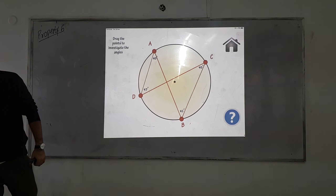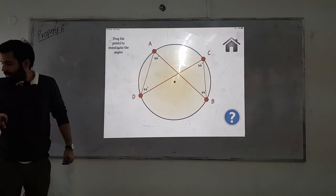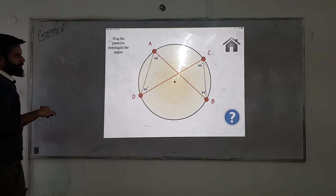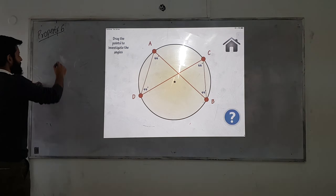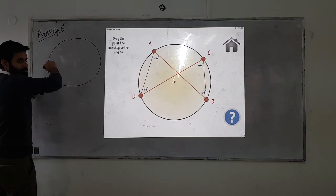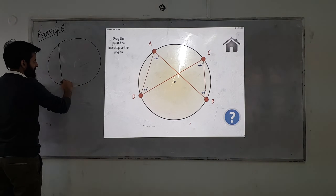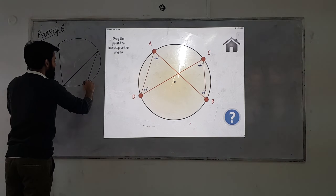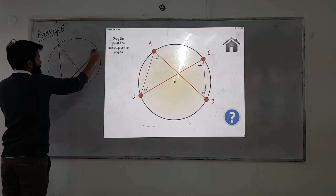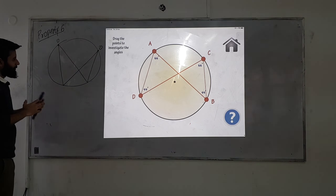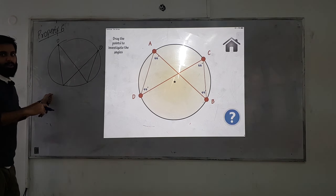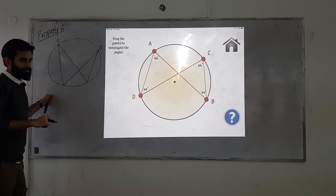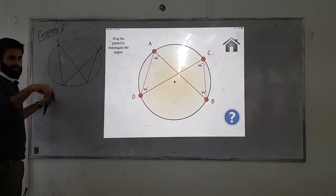Let's drag this around and see what's going on. Yes — the angle opposite the diameter will always be 90 degrees. All right, so this next property says: angles opposite the same segment will always be equal. You guys know what a segment is?